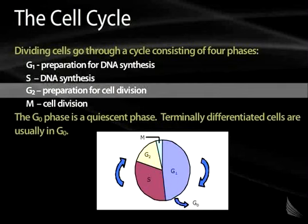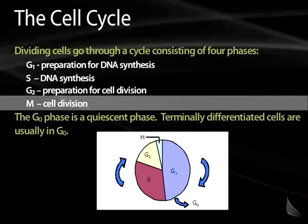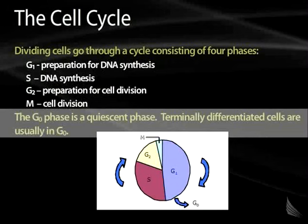The next phase is G2, or the second gap phase, in which the cell is preparing for cell division. Then there's the M phase, or the mitotic phase, in which the cell is actively dividing and growing into two different daughter cells. There's also a fifth phase that arises from G1, called the G0 phase. This is a quiescent phase in which there's no active replication of DNA or cell division going on. Most terminally differentiated cells in an organism are found in this G0 phase.